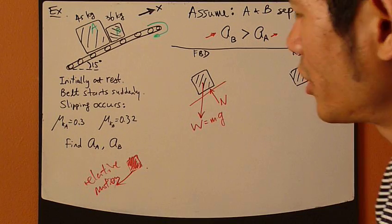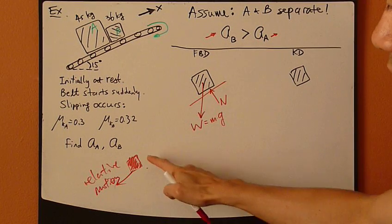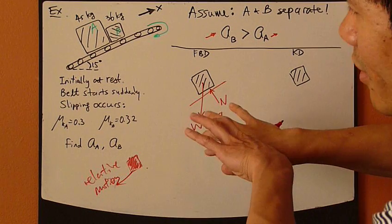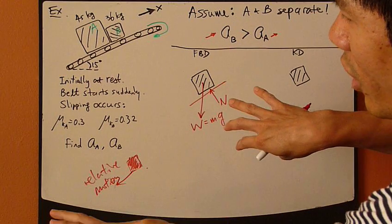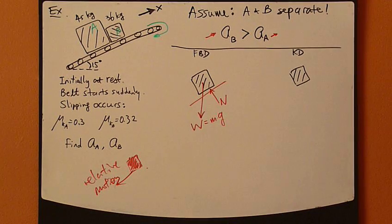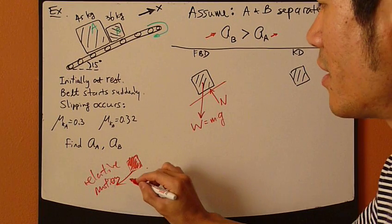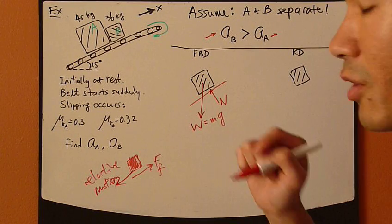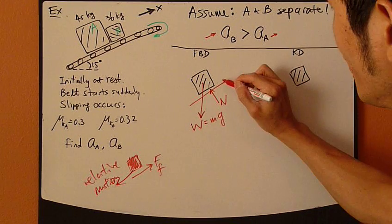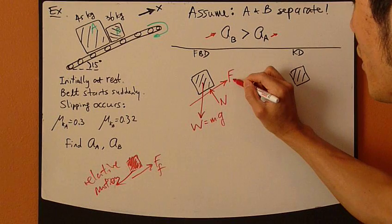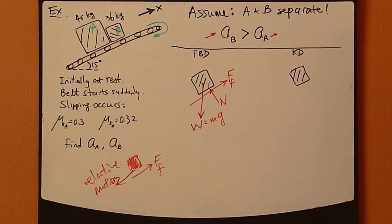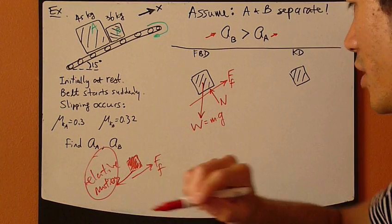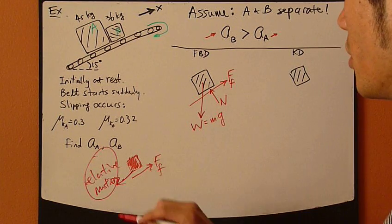Relative motion. So this crate will tend to, as if the crate is moving downward relative to this belt. So friction force opposes this relative motion. Therefore, friction force goes upward. This is my friction force, F_f.